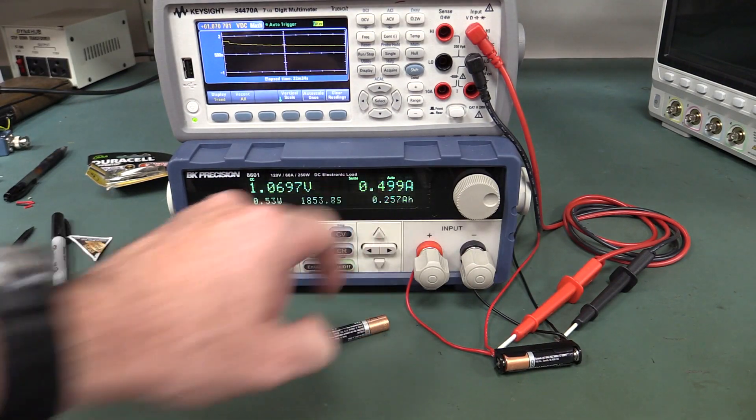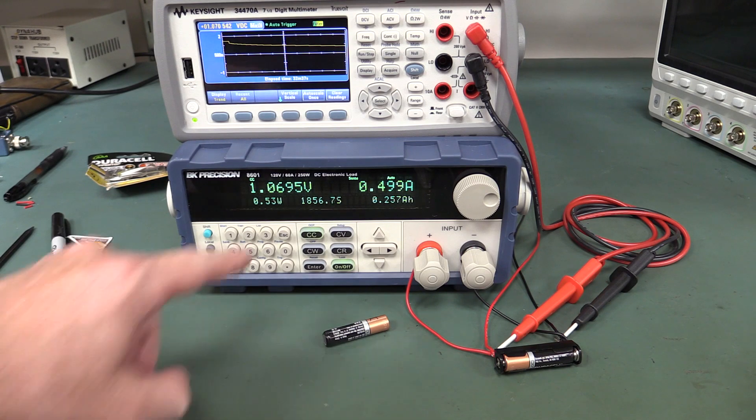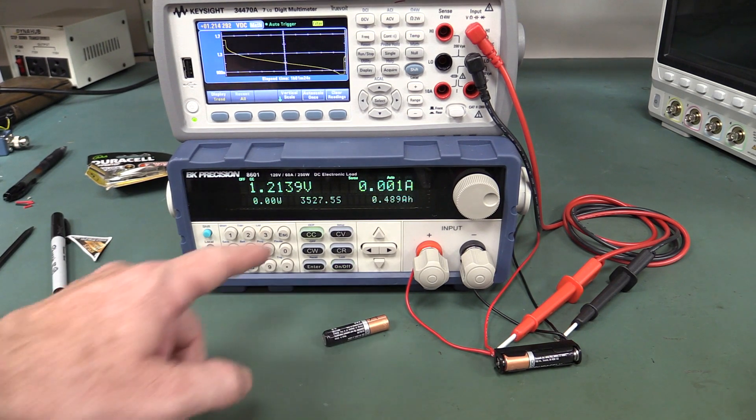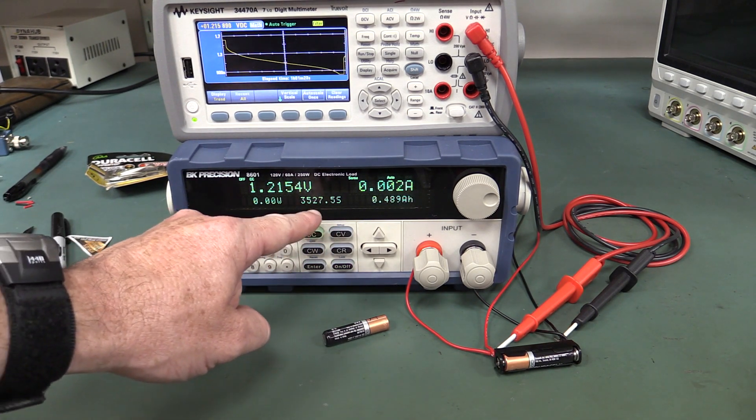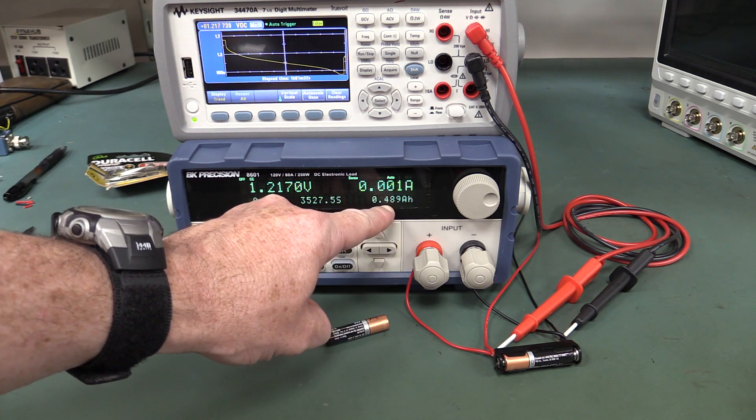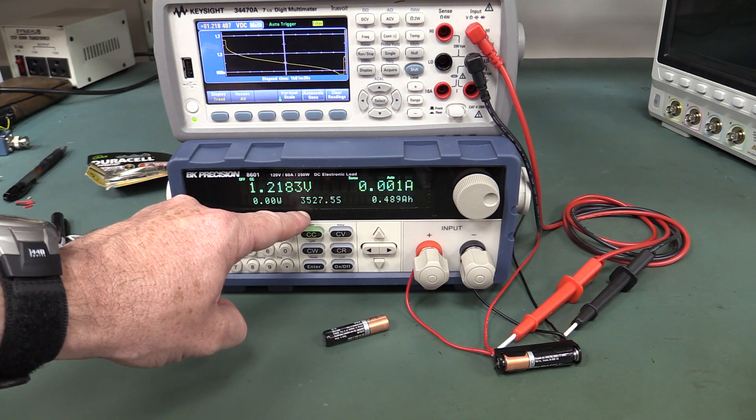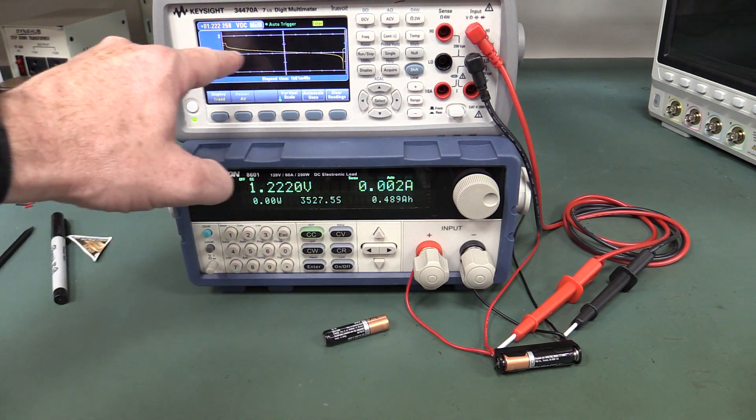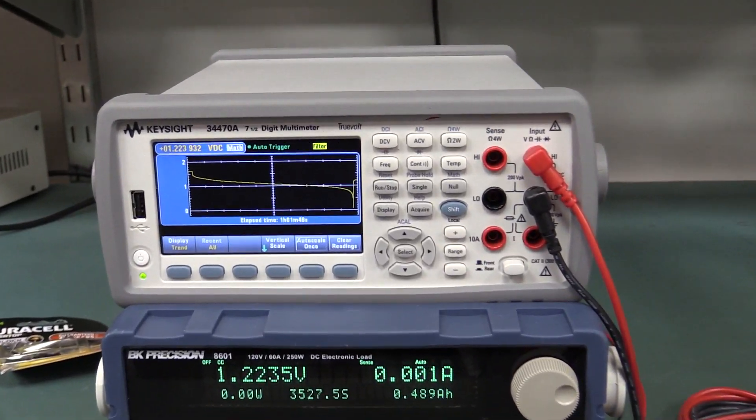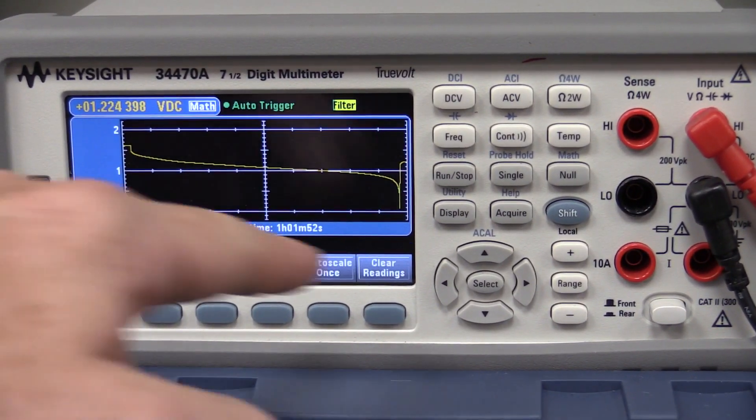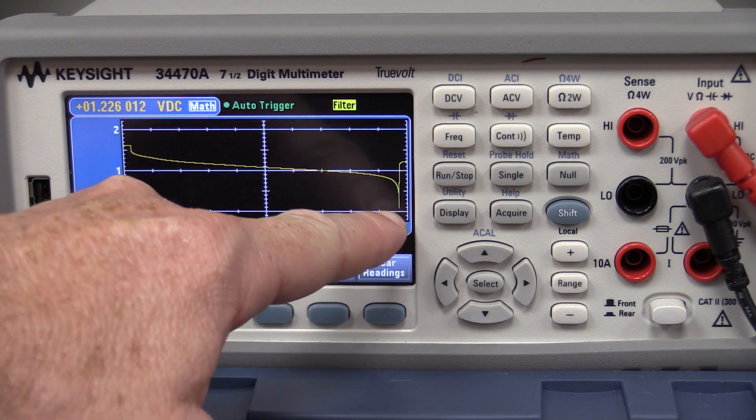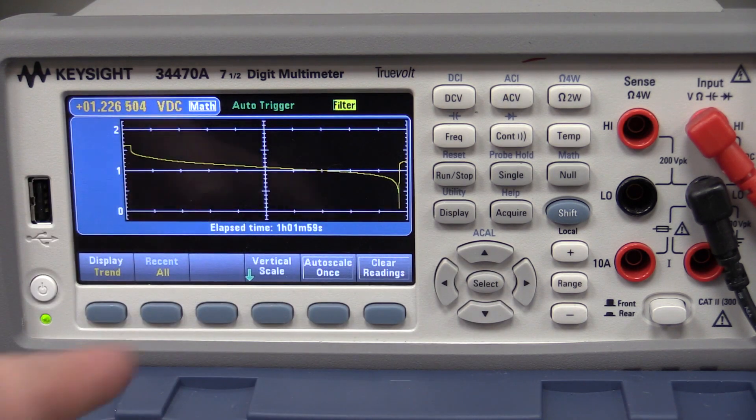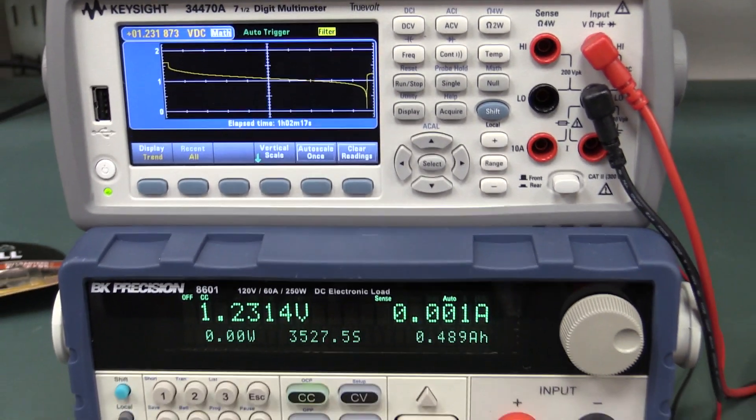We're already at half hour capacity, 257 milliamp hours extracted and we're right down to 1.07 volts. And there we have it, it switched off. Got to 489 milliamp hours. Look at that, the curve dropped right off, we killed that sucker. It actually plummeted right down and we're actually back up to 1.23 volts now.